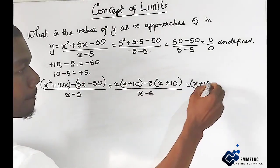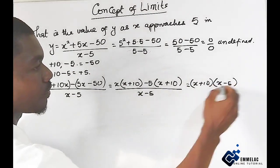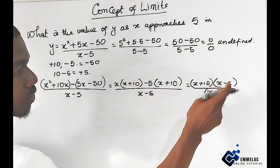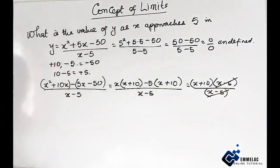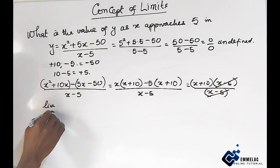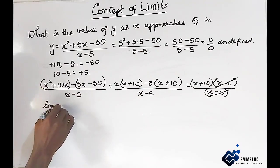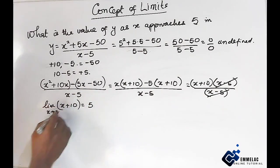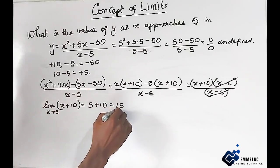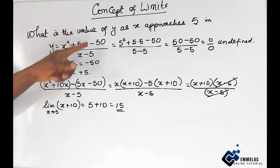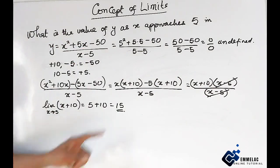We have x plus 10 and x minus 5, all over x minus 5. We have a common factor between the numerator and the denominator that we can eliminate. We can now introduce our limit as x approaches 5. This gives us 5 plus 10, which is 15. So it implies that for this equation, as x approaches 5, the whole function approaches 15.